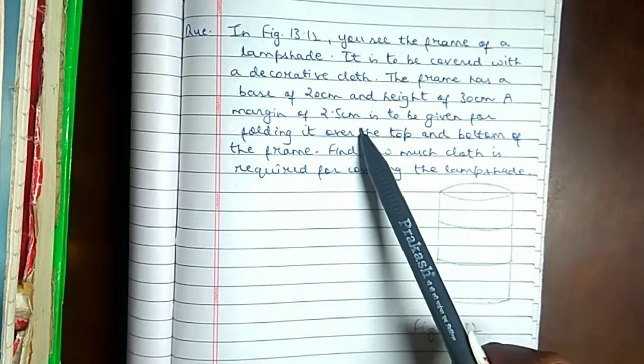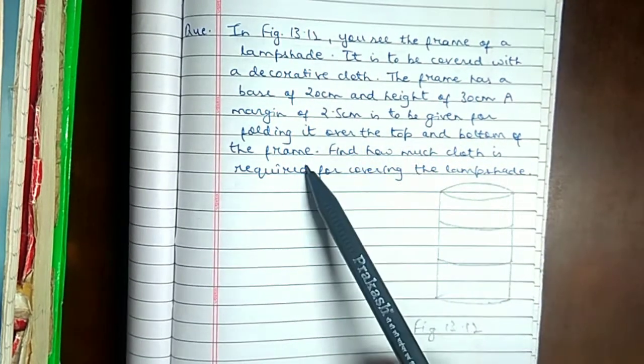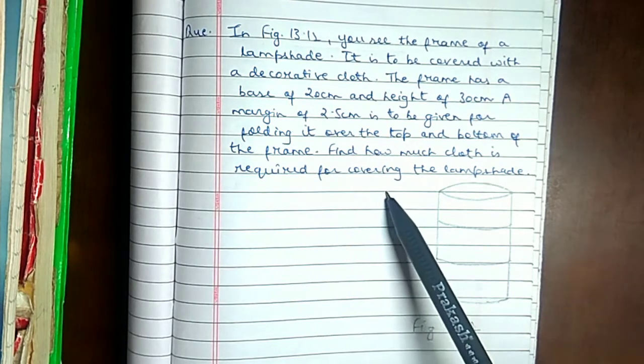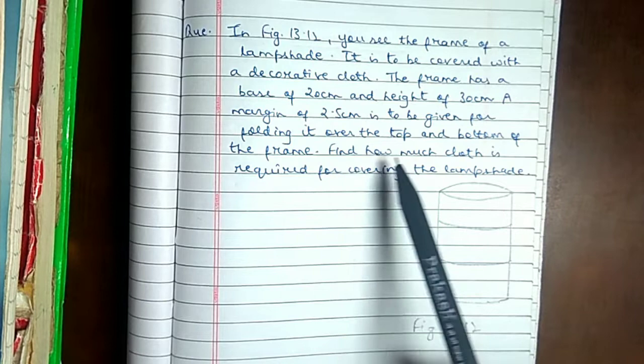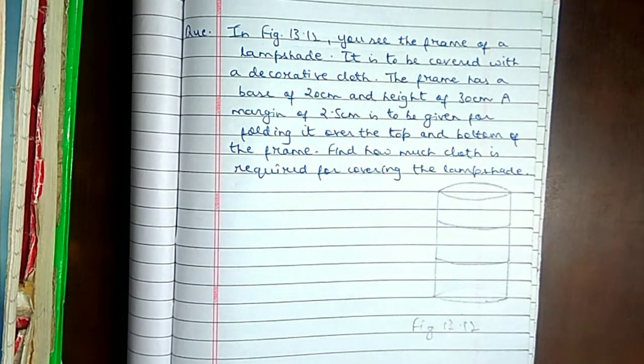A margin of 2.5 cm is to be given for folding it over the top and bottom of the frame. Find how much cloth is required for covering the lampshade. This question asks how much cloth is required for covering. We understand that we need to find the area.